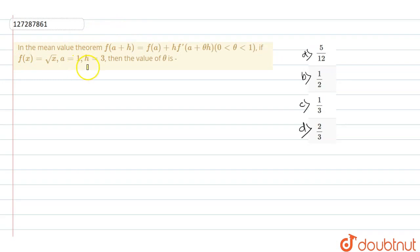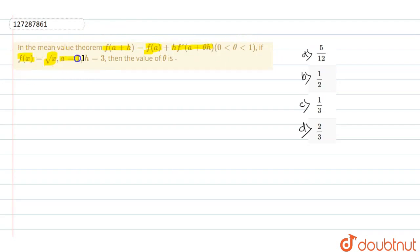Welcome guys. In the Mean Value Theorem, f of a plus h equals f of a plus h times f dash of a plus theta h. If f of x equals root over of x, a equals 1, h equals 3, then the value of theta is what?